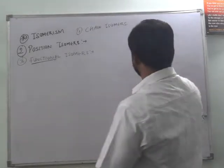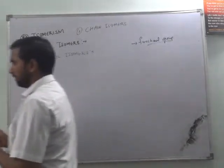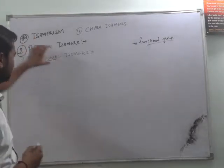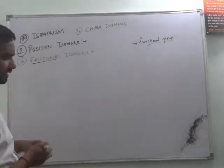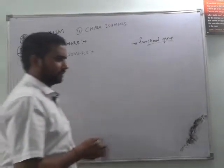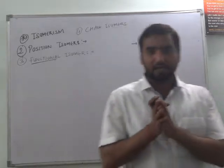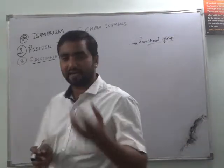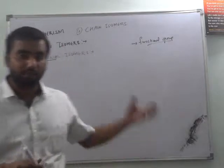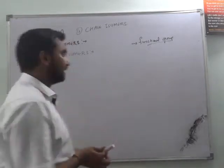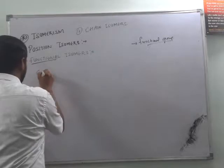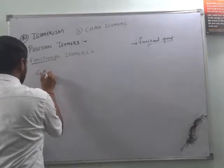So this functional group isomer — functional isomer — states that in these isomers the compounds are same in their molecular formula but they have different functional groups attached. Like for example, if I take C4H8O,